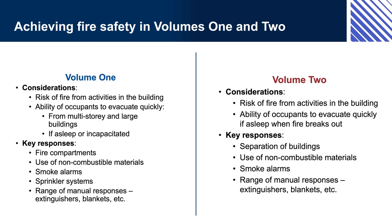Volume 2 covers a smaller range of building classifications, predominantly housing, with different risks, but there are fire risks nevertheless. Some of the activities that typically take place in Class 1 and Class 10 buildings can cause fire — for example, cooking, which is a common cause of house fires. Other common causes include outdoor barbecues or other outdoor fires, overloading of electrical systems, too many plugs in one outlet, and smoking, particularly in bed. Occupants of Class 1 buildings may also be asleep at the time the fire occurs, so they need to be alerted. Evacuation can generally be quicker, however, because Class 1 buildings tend to be smaller than commercial buildings and only one or two storeys high.